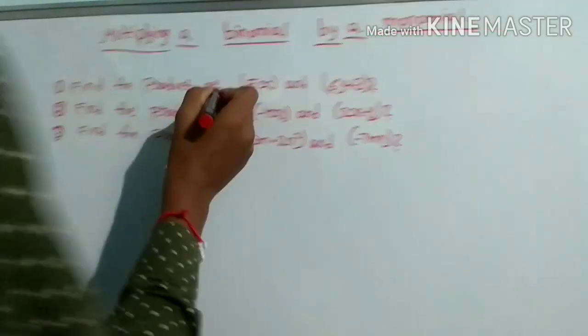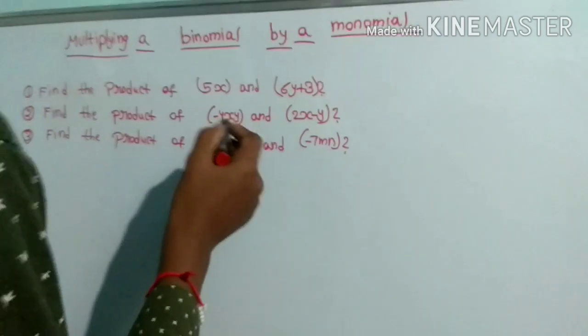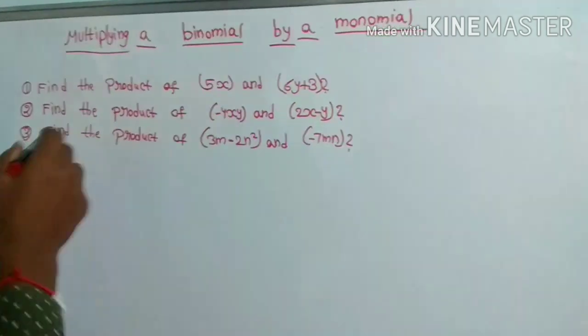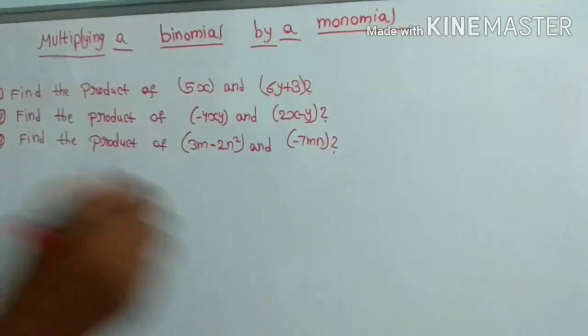First, find the product of 5x and 6y plus 3. Second one, find the product of minus 4xy and 2x minus y. Find the product of 3m minus 2n square and minus 7mn.